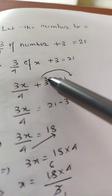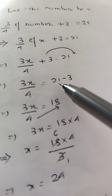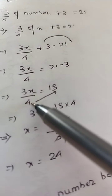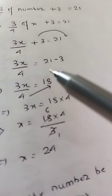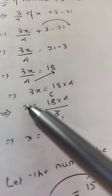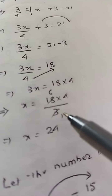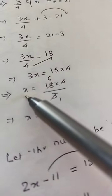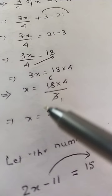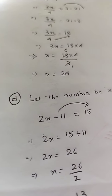Transpose +3 to the right hand side: 3x/4 = 21 − 3 = 18. Now take the 4 across — it is in division form, so it multiplies: 3x = 18 × 4. Then take 3 across — it is in multiplication form, so it divides: x = (18 × 4) / 3 = 24. The unknown number is 24.